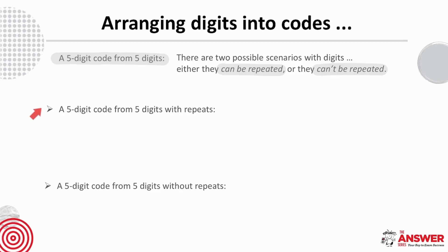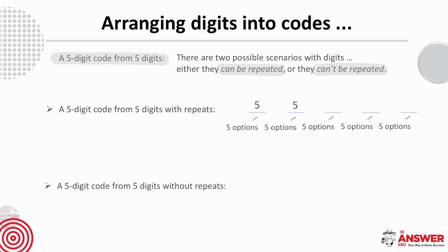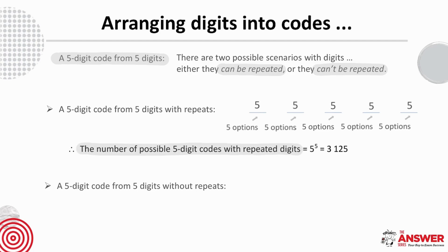First let's consider a five-digit code from five digits with repeats. Because the code needs to be five digits long, let's place our five slots. For the first slot there are five possible options, and because digits can be repeated, there are five options again for the second slot, and for each subsequent slot. The number of possible five-digit codes with repeated digits is therefore five to the power of five, which is 3125.